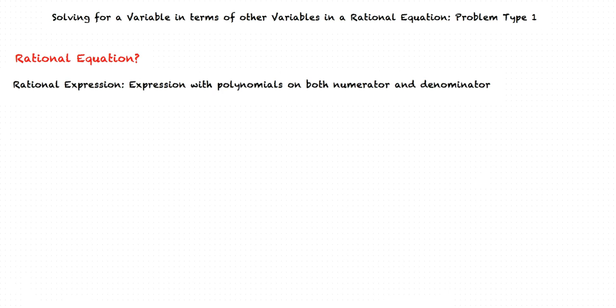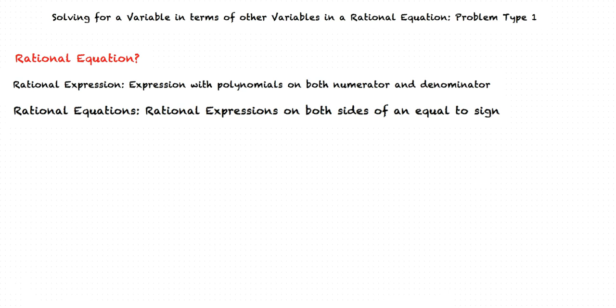What is a rational equation? A rational expression is an expression with a polynomial in the numerator and denominator. When rational expressions are present on both sides of an equal sign, we obtain a rational equation.